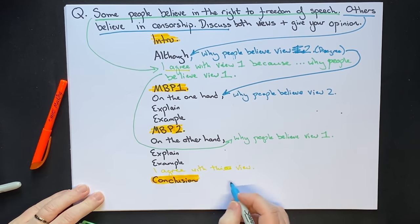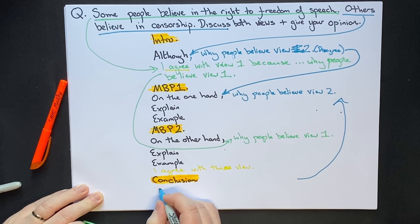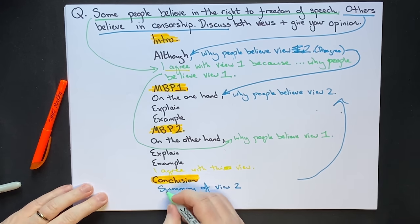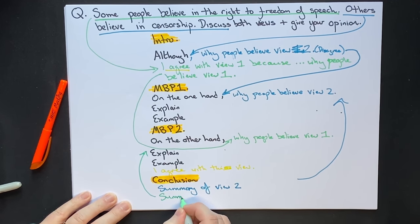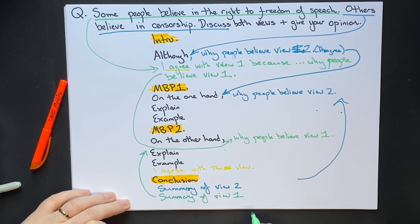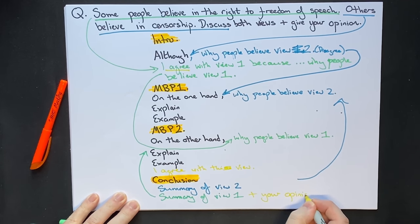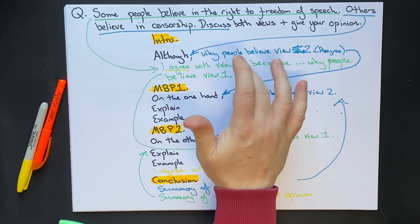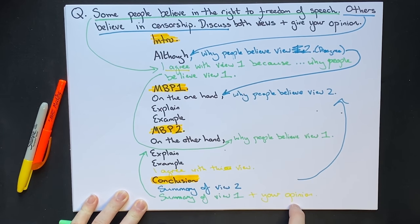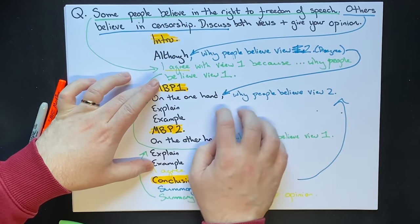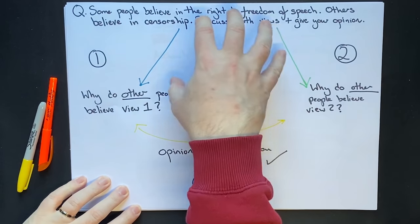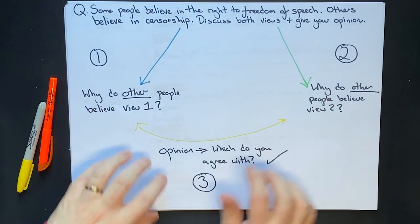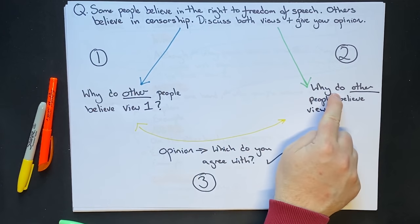Then we finish with our conclusion: a summary of view two, a summary of view one, and your opinion. So looking back at the whole essay — the introduction discusses both views and gives our opinion; the conclusion discusses both views and gives our opinion; the main body discusses both views and gives our opinion. The main thing this structure does is take our thoughts out of our head and organize them clearly on the page.